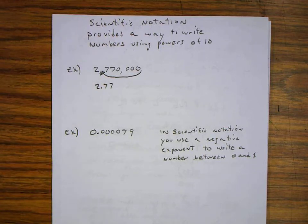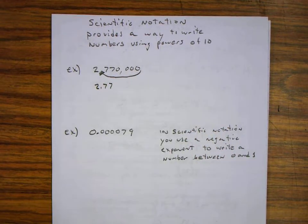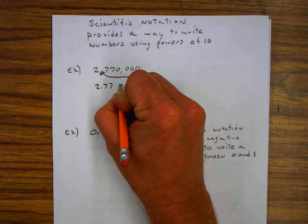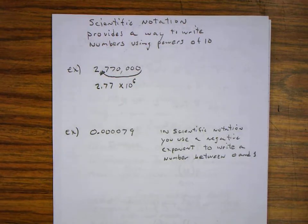Now after you do that you move the decimal point 6 places from here to here. The original number is greater than 10, so we put an exponent of 6. So our scientific notation we write 2.77 times 10 to the sixth.